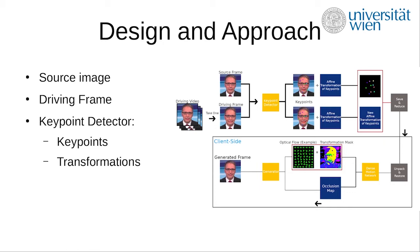This motion transformation represents the difference between the source and the currently processed image. We then export this information by quantizing the tensors of the key points and transformations, converting them into an int6 data structure instead of a float32 value to save even more data. This data is turned into a binary file and compressed with the LZMA2 zip algorithm. The receiver unpacks this data and converts it back to float32 to process it.